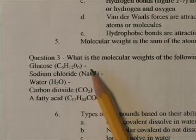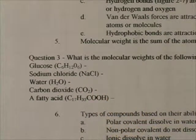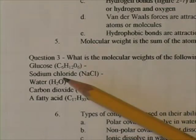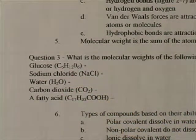If you add them all together, your answer will be 180. So that's the molecular weight of glucose. You can also figure the molecular weight of some of these other substances.